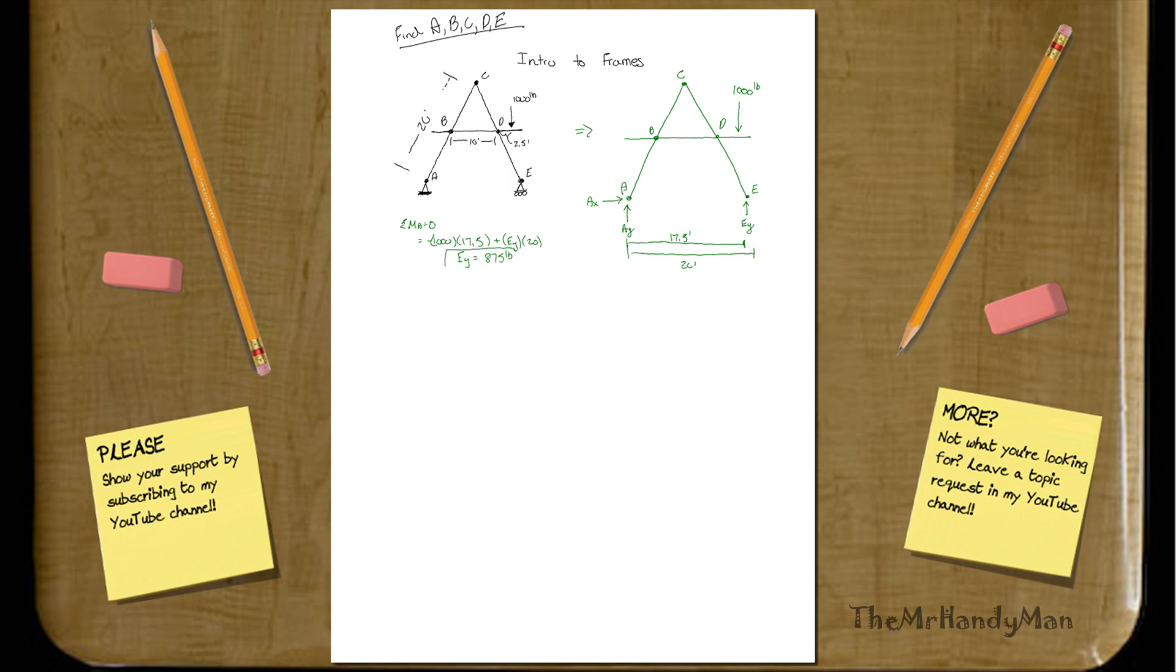And actually, this is the total vector, because there is no E_X, there's no X component of the E, so E is actually 875, so this is going to be our first solution.